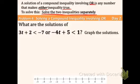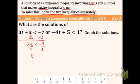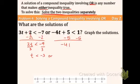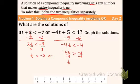Example four: 3t plus 2 is less than negative 7, OR negative 4t plus 5 is less than 1. Let's focus on the left inequality — subtract 2: 3t is less than negative 9. Divide both sides by 3: t is less than negative 3. Bring down the OR, and now do opposite operations for the next inequality — subtract 5: negative 4t is less than negative 4. Divide both sides by negative 4, and remember: when we divide by a negative, we flip the symbol. So t is greater than 1.